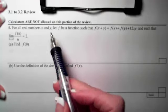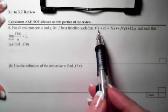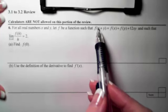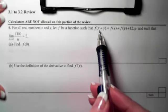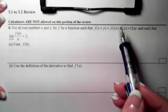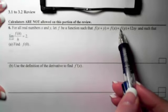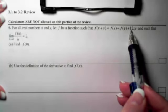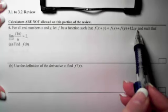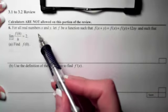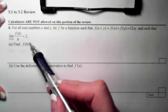So part A of this, we are given a function, and it's defined a little differently than what we're accustomed to seeing. We have the function of x plus y is the same as the function of x plus the function of y plus 12 times xy. And then based on that, we want to figure out what f of 0 is.